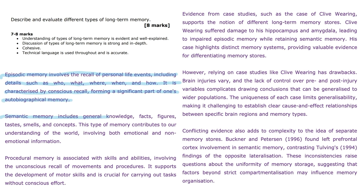Semantic memory includes general knowledge, facts, figures, tastes, smells, and concepts. This type of memory contributes to our understanding of the world, involving both emotional and non-emotional information. Procedural memory is associated with skills and abilities, involving the unconscious recall of movements and procedures.